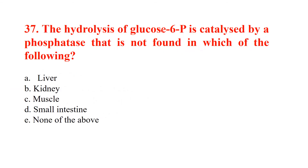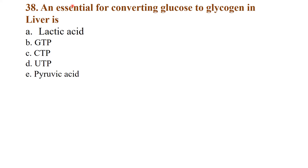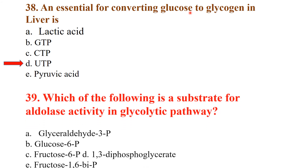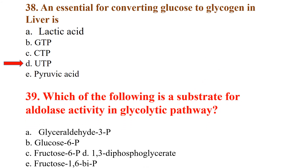The hydrolysis of glucose-6-phosphate is catalyzed by a phosphatase not found in muscles — muscles lack glucose-6-phosphatase. Question 38: an essential enzyme for converting glucose to glycogen in the liver is UDP-glucose. Which of the following is a substrate for aldolase activity in the glycolytic pathway? The answer is fructose-1,6-bisphosphate.